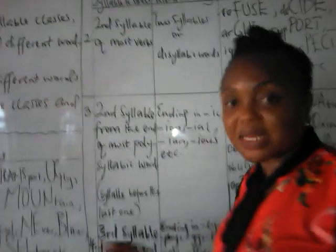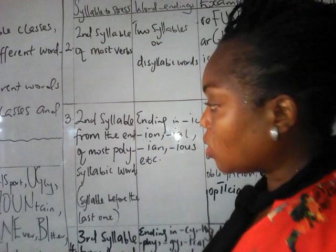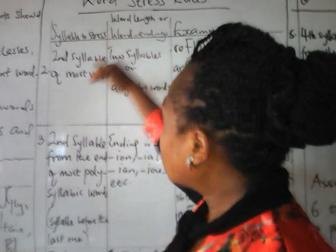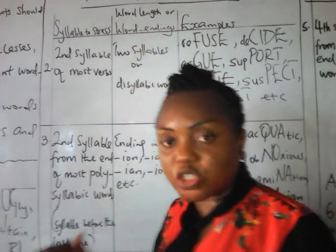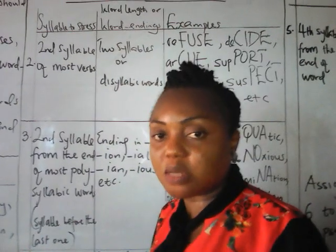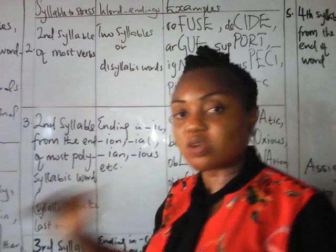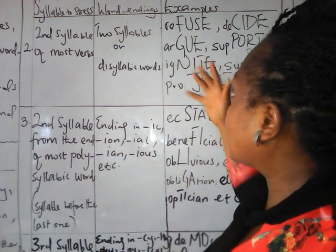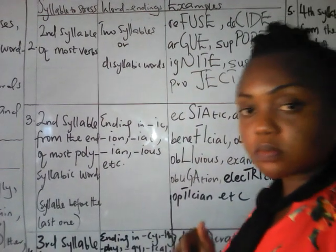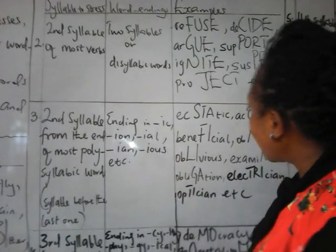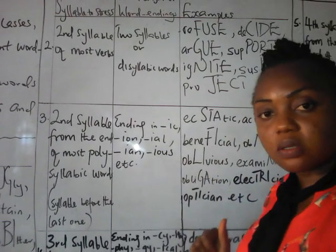Moving on, we have the polysyllabic word — but before that, let's look at verbs. Verbs that are two syllables in nature are normally stressed on their second syllable. Examples include: refuse, decide, argue, support, ignite, suspect, project, and many more.